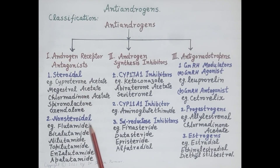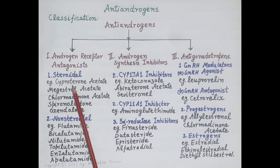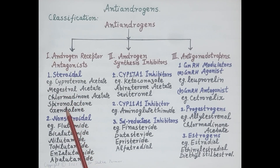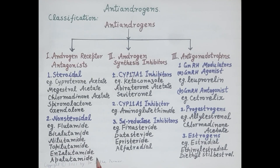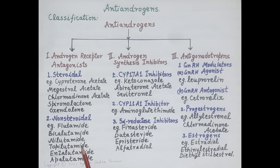Androgen receptor antagonists are of two types: steroidal and non-steroidal. Steroidal agents include cyproterone acetate, megestrol acetate, chlormadinone acetate, spironolactone, and oxendolone. Non-steroidal androgen receptor antagonists include flutamide, bicalutamide, nilutamide, topilutamide, enzalutamide, and apalutamide. Non-steroidal agents have largely replaced steroidal ones due to their higher selectivity for androgen receptors.